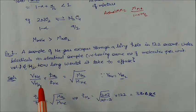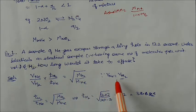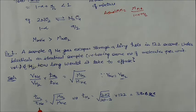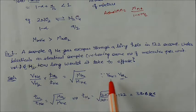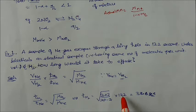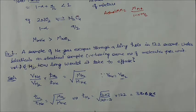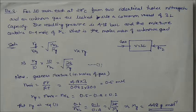Applying Graham's law directly: the rate ratio equals the square root of the molar mass ratio. Since volume and conditions are the same, the time ratio is inversely proportional to the rate. Molar mass of neon = 20, molar mass of hydrogen = 2. Substituting values: time for hydrogen = 122 × √(2/20) = 122 × √(1/10). Solving gives approximately 38.6 seconds.